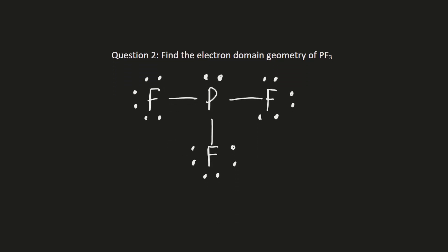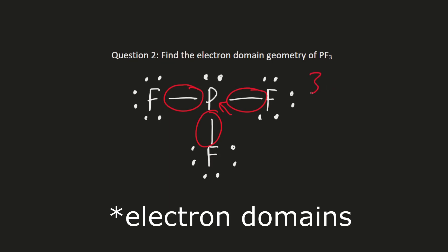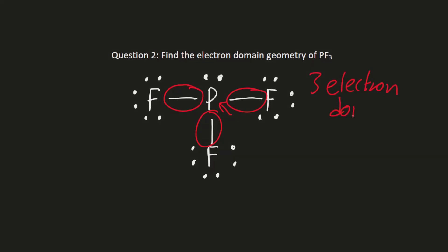Here we can see that the central atom is phosphorus, and it is bonded to three different atoms, each connected with one single bond, which gives us a total of three bonding electron domains. And then at the top of the phosphorus atom there is an unbonded pair of electrons, which gives us a grand total of four electron domains. Referring back to what was said earlier, we can deduce that PF3 has an electron domain geometry of tetrahedral.